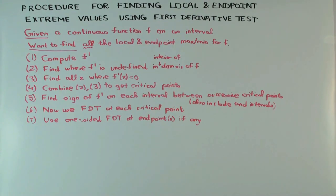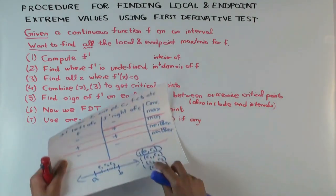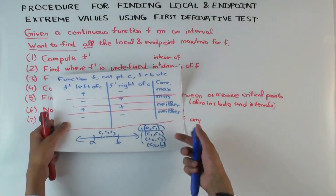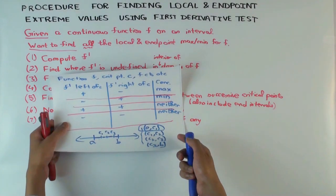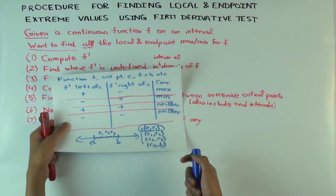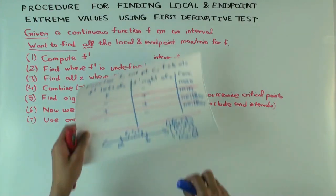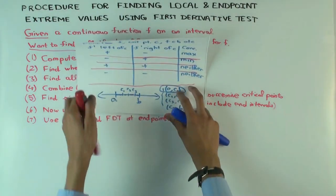The first derivative test actually gives us a strict result. If the signs are actually positive on the left and negative on the right, you will get a strict local maximum from this test. Let me illustrate it with this example.